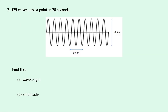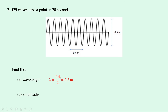Question 2 is very similar to question 1 but with a different scenario. We've got 125 waves passing a point in 20 seconds. We've got a horizontal distance of 0.4 metres and a full vertical height of 0.5 metres. Part A says to find the wavelength. We can see one trough to the next trough — that's one wavelength — and another trough to trough — that's another wavelength. So we have two wavelengths fitting into 0.4 metres, meaning lambda equals 0.4 divided by 2, which gives 0.2 metres.